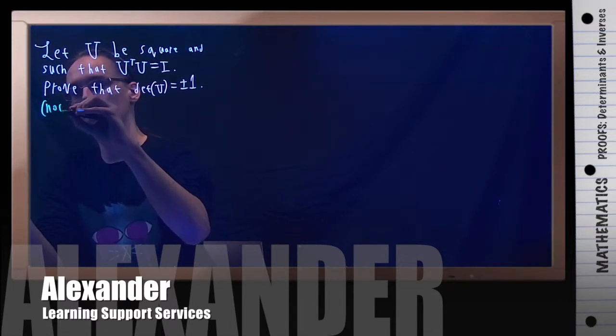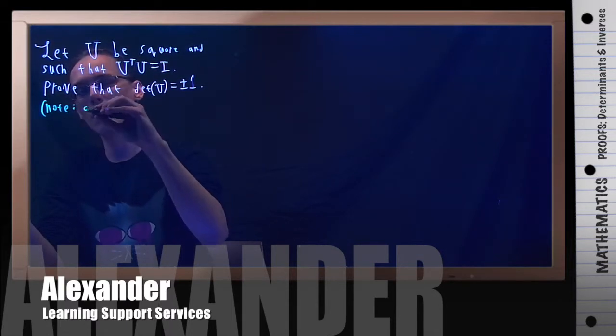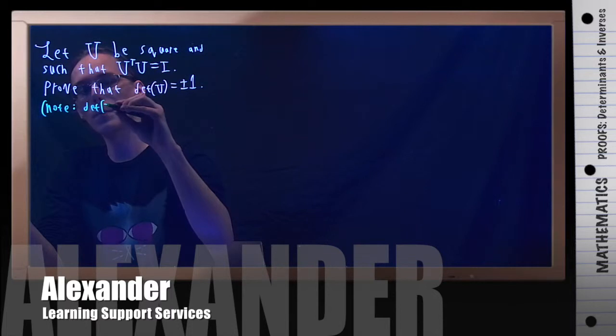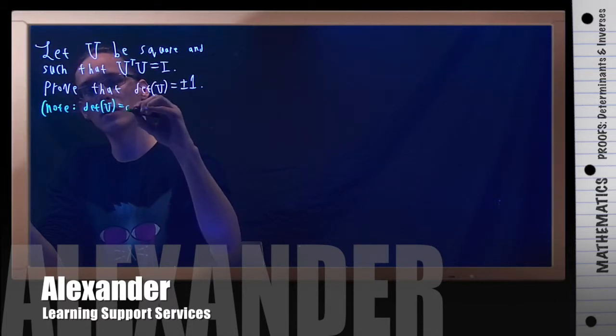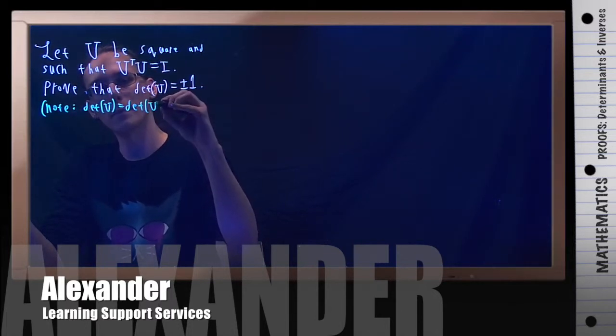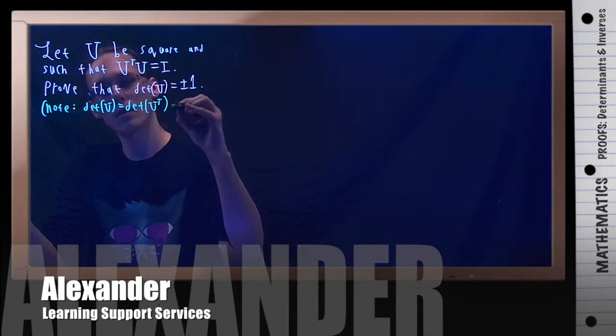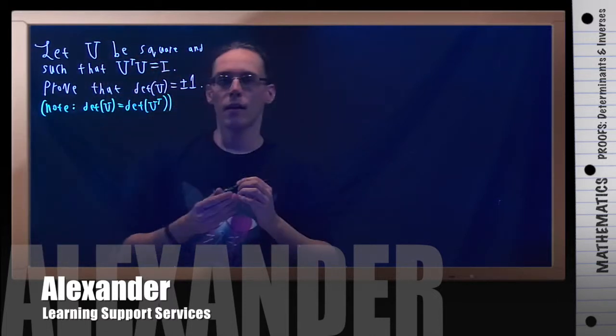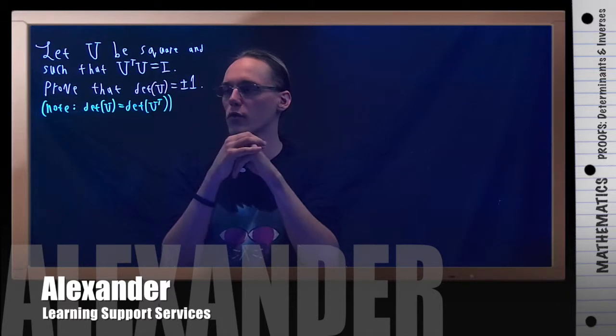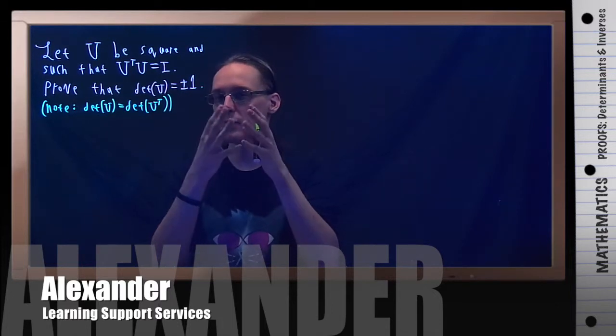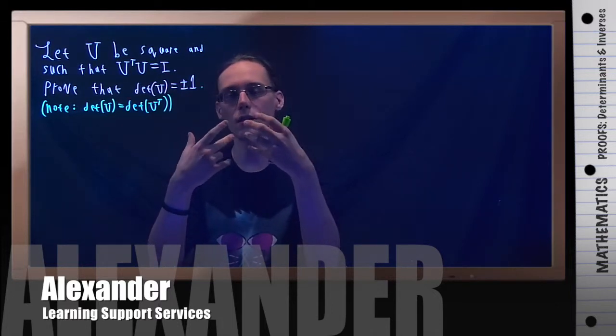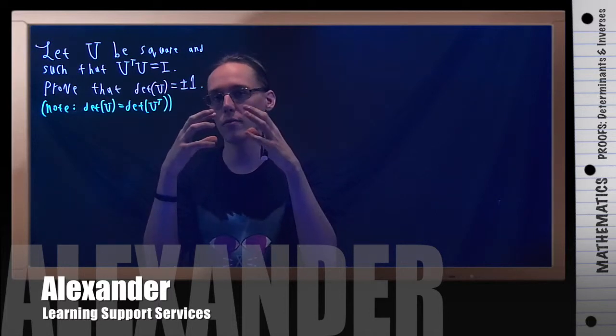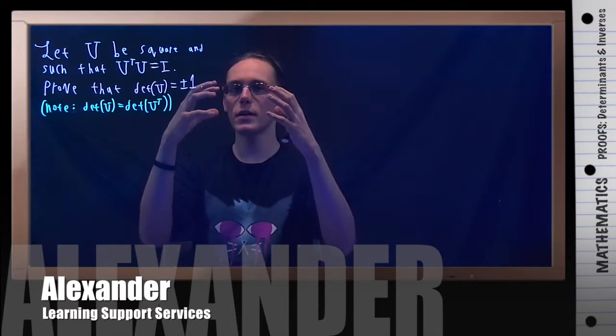Note: the determinant of U equals the determinant of U transpose. Proving that can be a bit of a mess, but hopefully intuitively it makes sense because the determinant is a characteristic of a matrix.